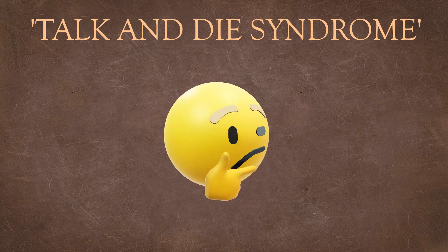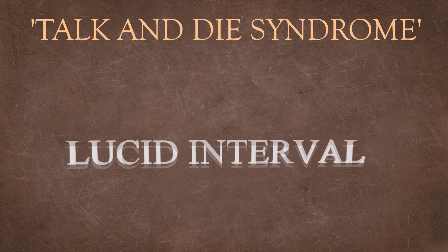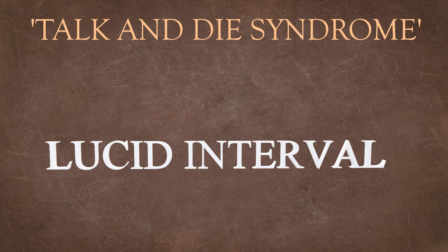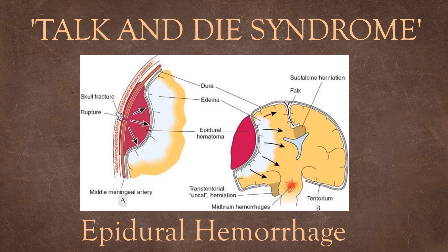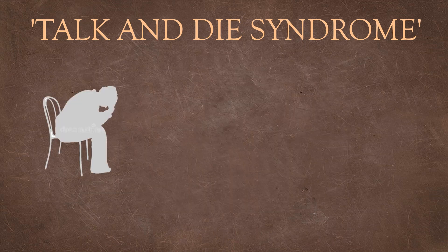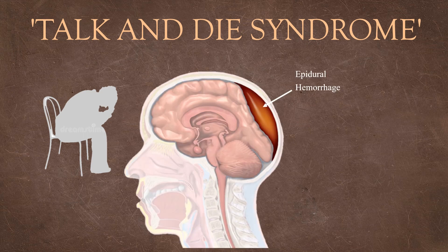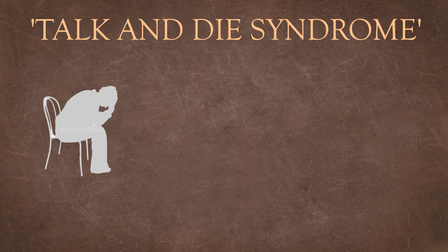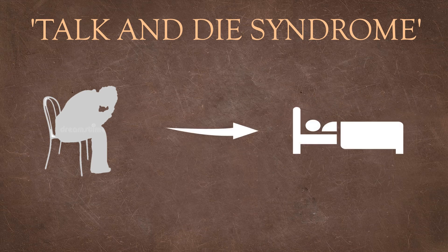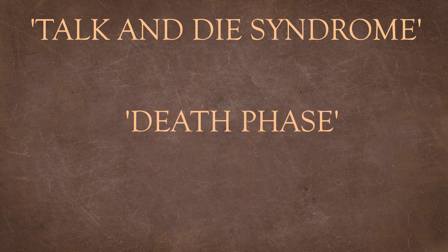Can you guess what this phase of consciousness is called? This period of consciousness is called the lucid interval. As blood loss occurs continuously, significant compression of brain parenchyma occurs, which can lead to brain herniation. Patients may have a headache and may become unconscious. If immediate medical care is not given, the condition gets severe — the person gets disoriented and ends up in a coma leading to death. This is the death phase.